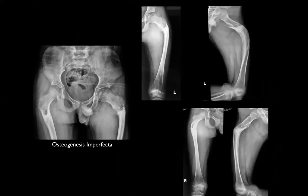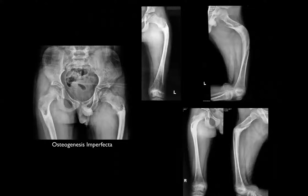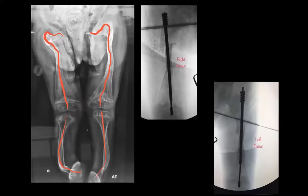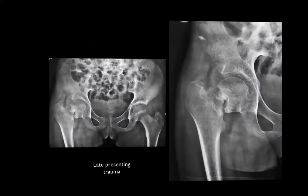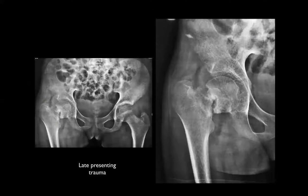In osteogenesis imperfecta, there can be pseudo-coxa vara — it's actually a procurvatum deformity of the proximal femur giving the appearance of coxa vara. You need to correct for the procurvatum deformity and see whether true coxa vara exists. In the illustrated case, once you correct the femoral shaft deformities, the neck shaft alignment is actually normal — no true coxa vara, just severe procurvatum deformity. Coxa vara can also appear in truck syndrome, other skeletal syndromes, congenital femoral deficiency, and late-presenting trauma.